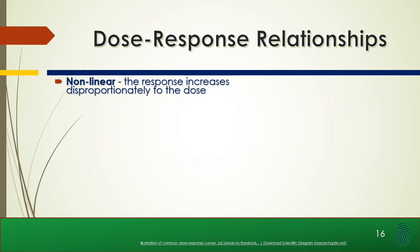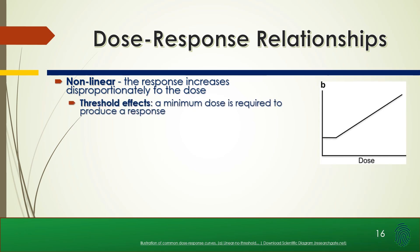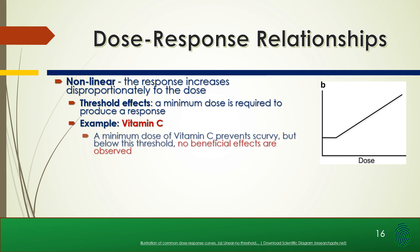Then we have non-linear, where the response increases disproportionately to the dose. We have threshold effects, where a minimum dose is required to produce a response. An example is vitamin C — a minimum dose of vitamin C prevents scurvy, but beyond this threshold, no beneficial effects are observed.